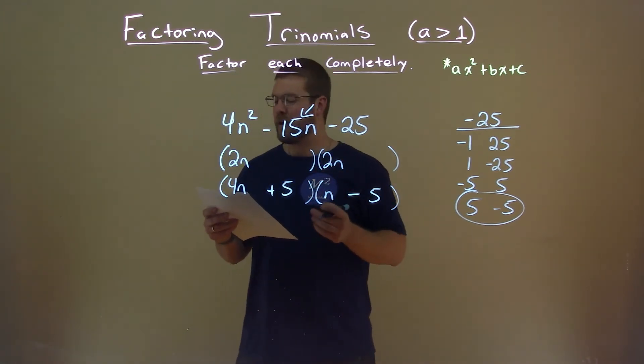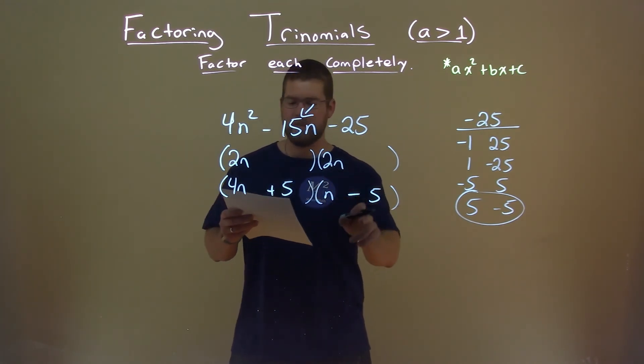And there we have our final answer: 4n plus 5 times n minus 5.